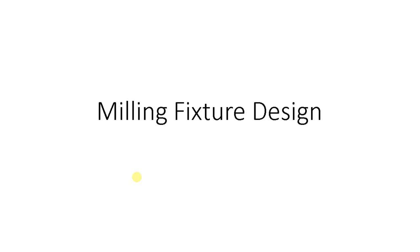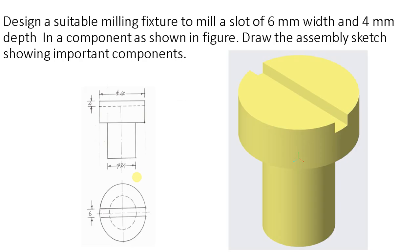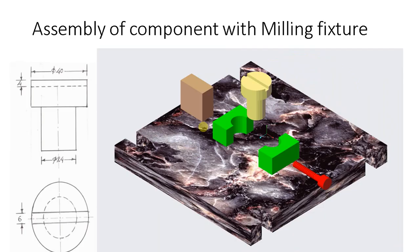In this video, we will learn about design of milling fixtures. First of all, we will consider one component. In this component, we need to mill a slot of 4 mm depth and 6 mm wide. For this component, we need to design milling fixtures, and we have to design each component for that milling fixture. Here I have proposed a design of milling fixtures.